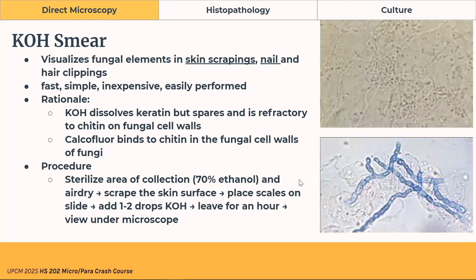The most common direct microscopy method is potassium hydroxide (KOH) prep. It visualizes fungal elements in skin scrapings, nails, and hair clippings — basically materials with a lot of keratin. The rationale is that KOH dissolves keratin but spares and preserves the chitin on fungal cell walls. Procedure: sterilize the area with ethanol, let it air dry, scrape the skin surface with a scalpel, place scales on a slide, drop 1–3 drops of KOH, leave it for an hour, then view under the microscope.